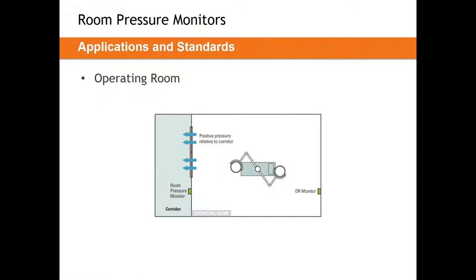Many surgical teams and facilities want to display more information inside the operating room — not only pressure but also temperature, air change rate, and humidity. They might want selectable occupancy and adjustable temperature all inside the OR. This is typically handled by a multi-variable monitor that can display whatever you'd like. Operating rooms aren't small, so often you get a fairly large screen — common sizes are seven or eight inches up to about 15 inches — so staff can see it from across the entire room.